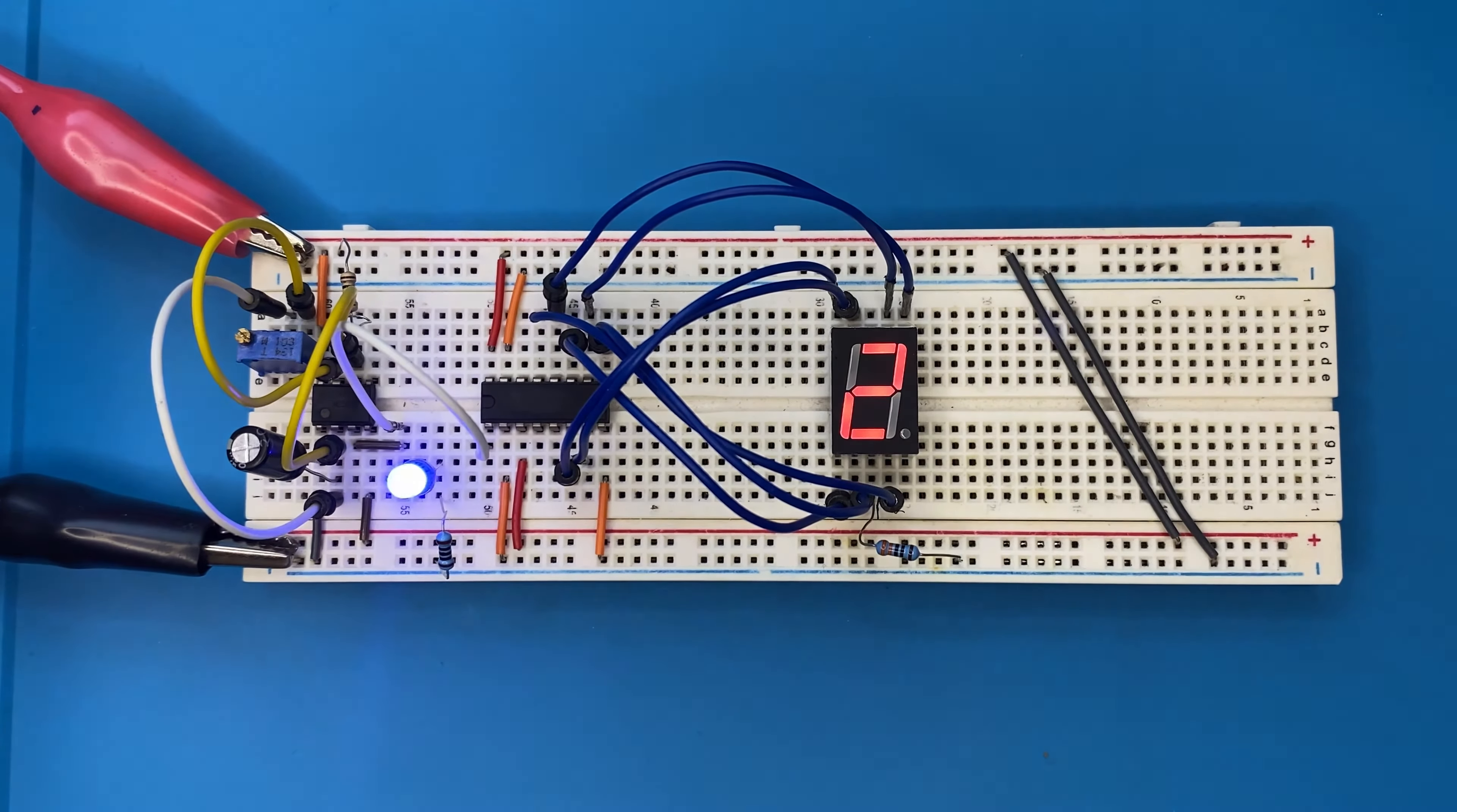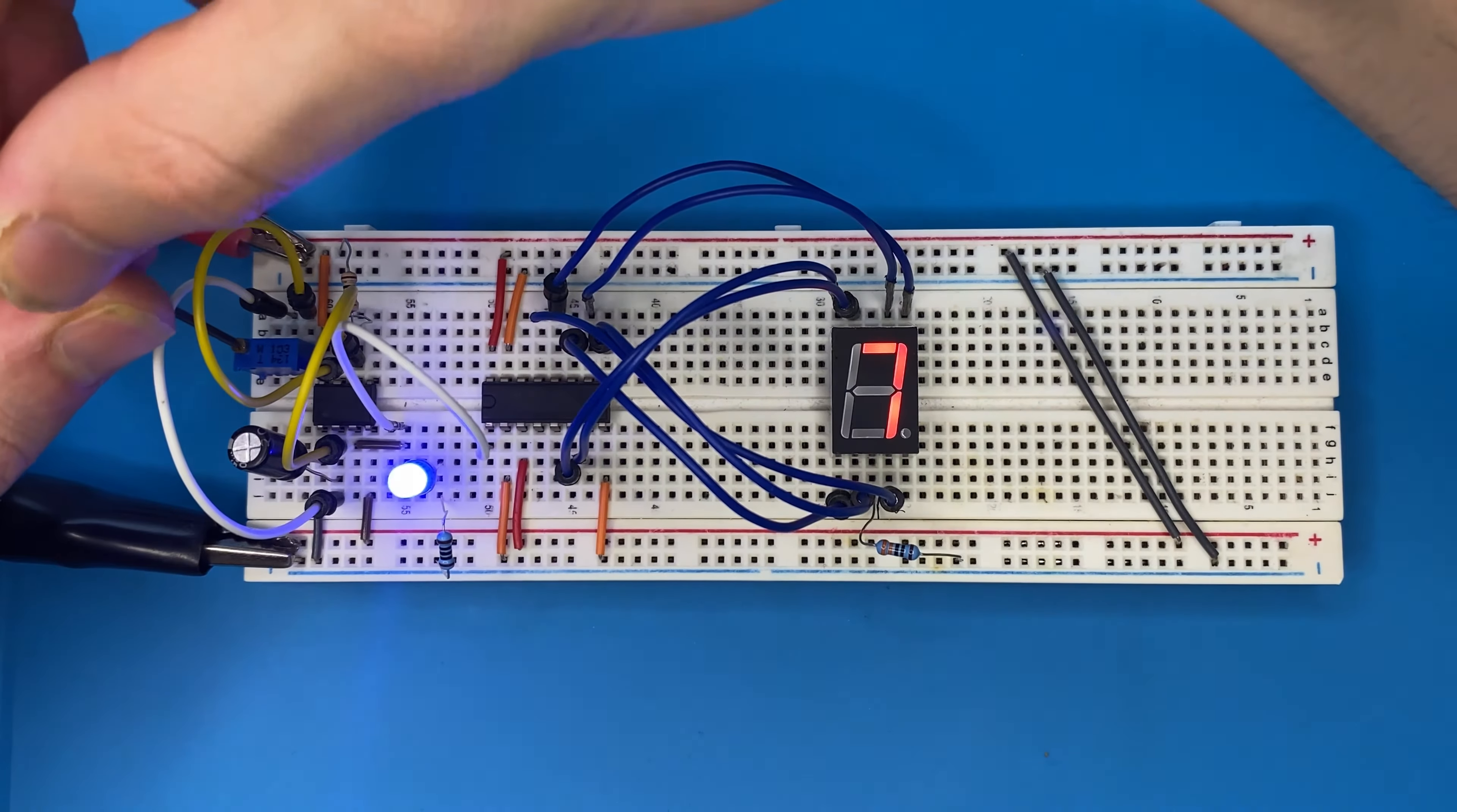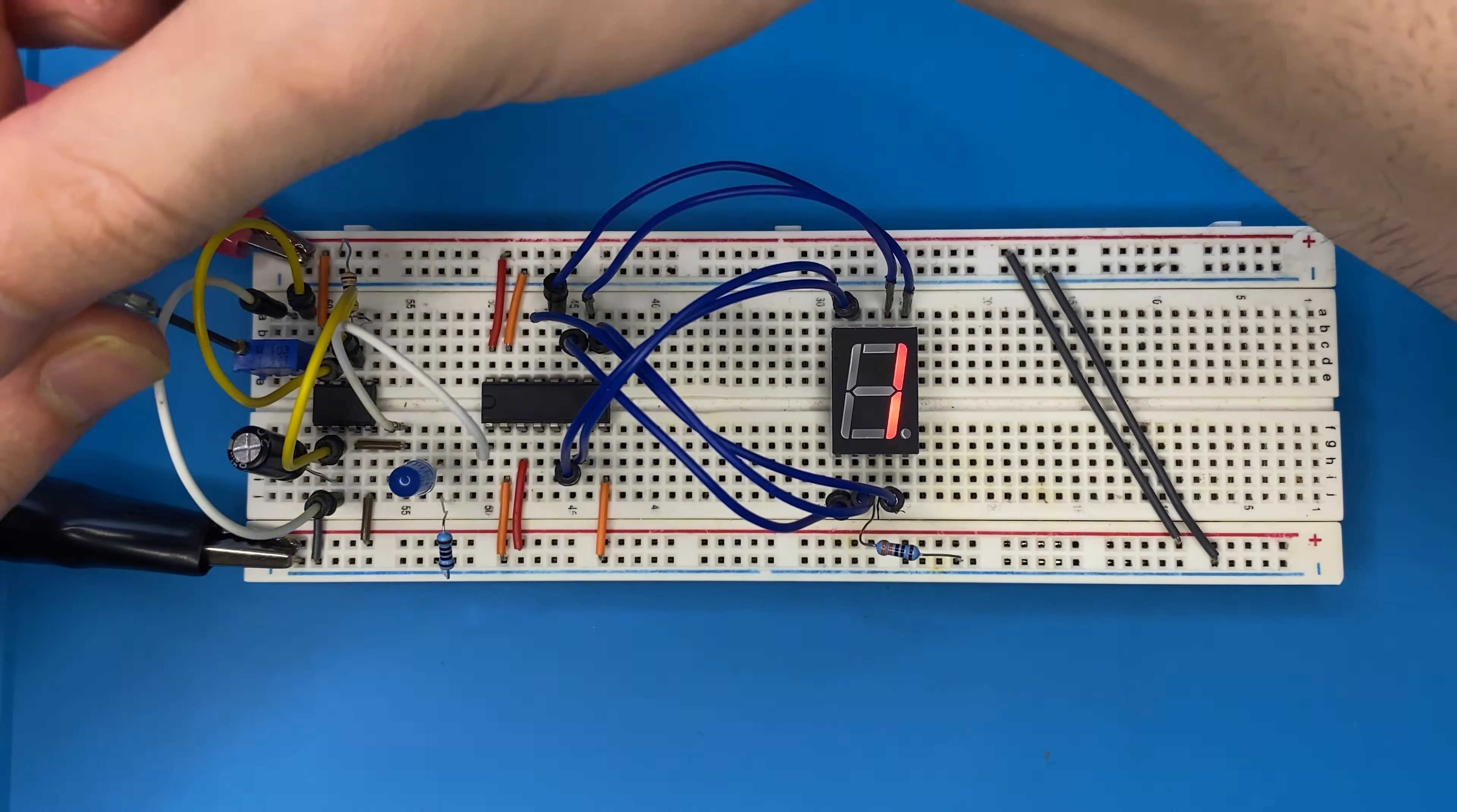By changing the potentiometer, we can change the flashing rate of the LED. We can make them faster, so that on the display the numbers would change faster.